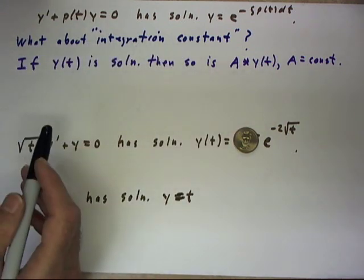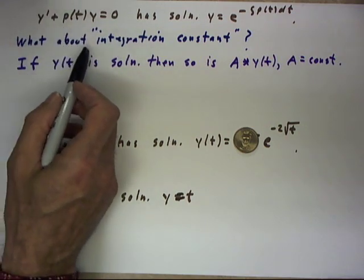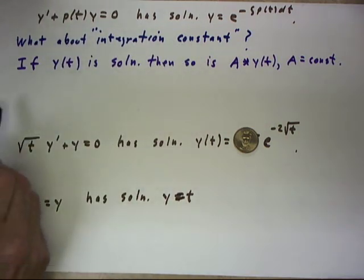So what about this integration constant idea? The idea that when you solve a first order equation, you have an arbitrary constant. Let's observe.